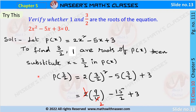First, we substitute x equal to 3/2 in p of x. Then we can write p of 3/2 is equal to 2 into (3/2) whole square minus 5 into 3/2 plus 3. Wherever we have x, we replace x with 3/2. Then next we can write it as 2 into 9/4 minus 15/2 plus 3.